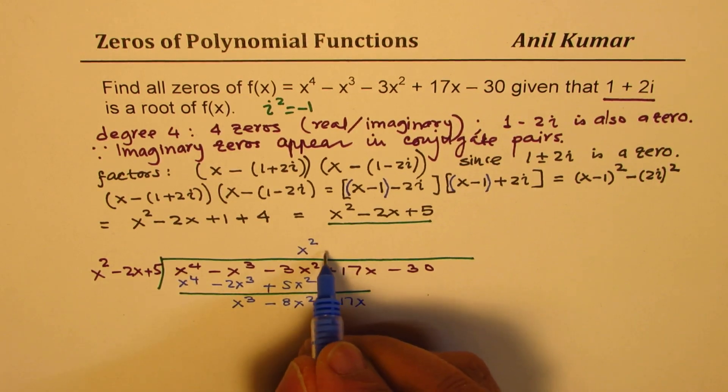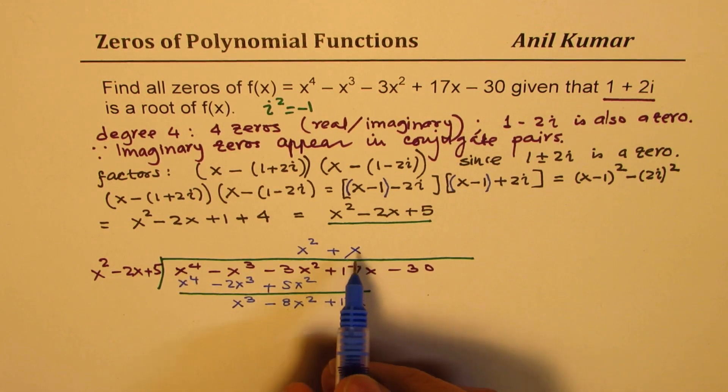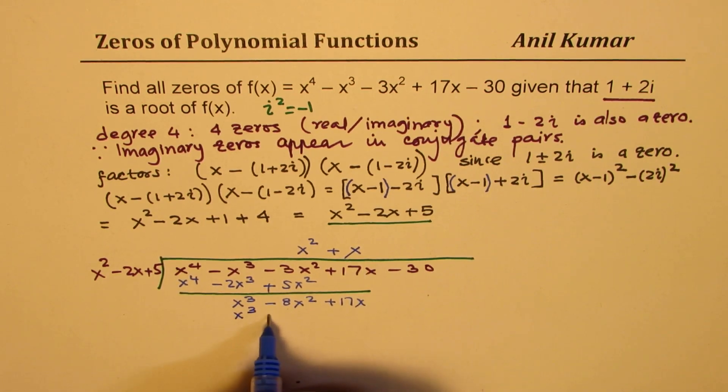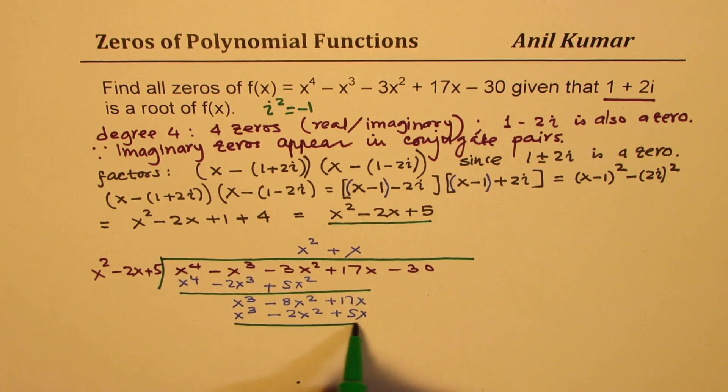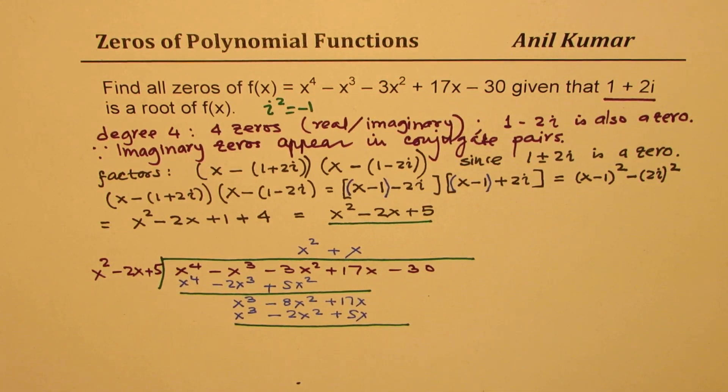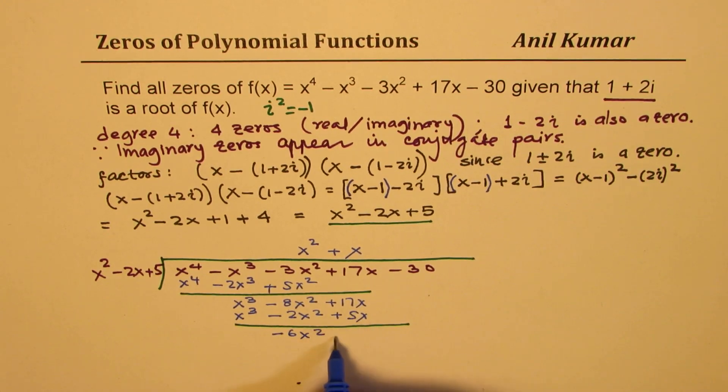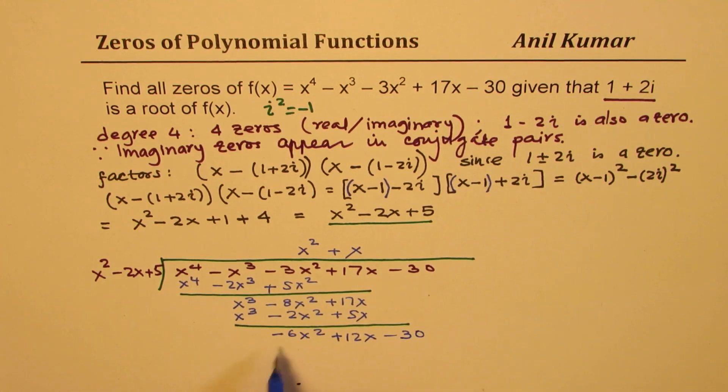Then we have to multiply by x. It gives us x^3 - 2x^2 + 5x. And then when you take this, we get -6x^2 and this will give you 12x, plus 12x.